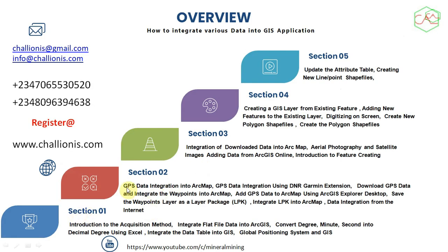Overall, the content is divided into five sections. The first section covers data acquisition methods. Then we go into flat file data acquisition and how we can convert degrees, minutes, and seconds into decimal using Excel, and how to use data from the global positioning system. From there we go into GPS data integration into ArcMap using the DNR Garmin extension and other extensions available in ArcGIS. We'll also see how to integrate downloaded data into ArcMap, like aerial photographs, satellite imagery, and other online data, as well as feature creation in ArcGIS.